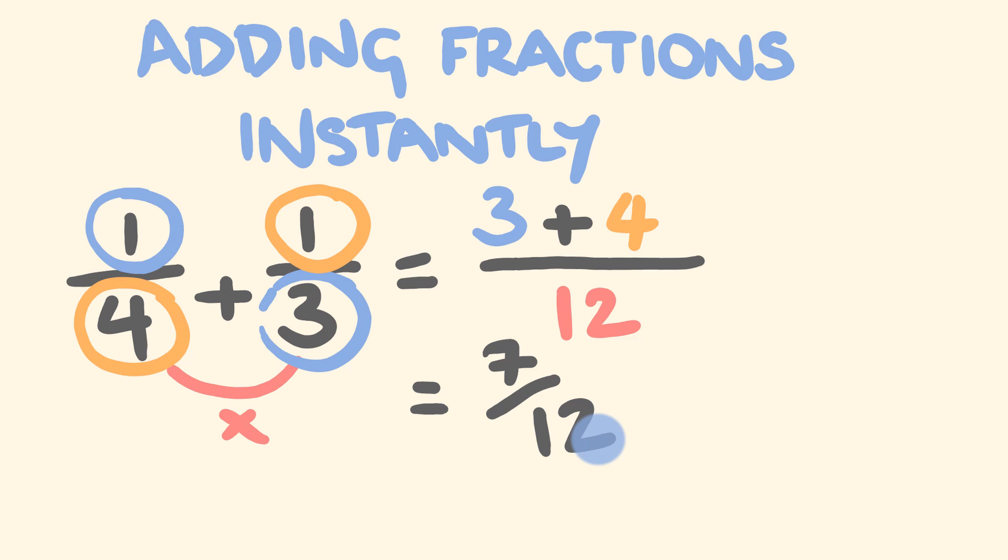The bottom number, the denominator, is 12 and there's our answer. As you can see, there's not tons of working out, working out common denominators. We've pretty much just done this directly. So what about another example?